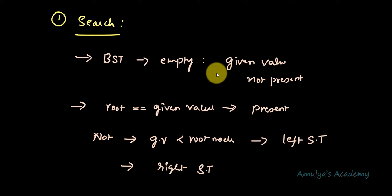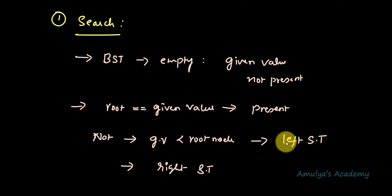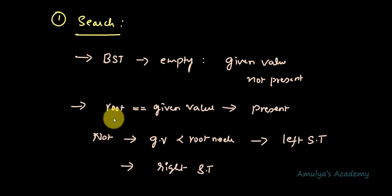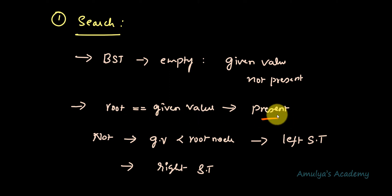You need to perform this search operation recursively. If the given value is less than the root node, in the left subtree you start from the root node of that left subtree and check these conditions again — whether it is empty or not, then compare the value of that subtree root with the given value. You repeat this operation again and again until you find the given value or the search is completed.